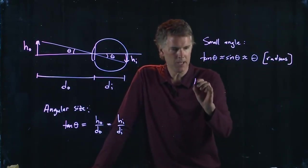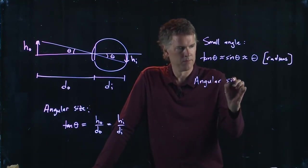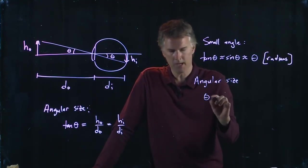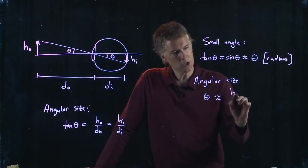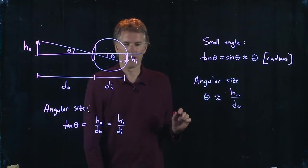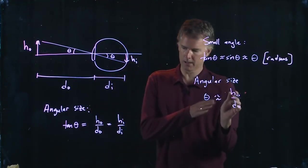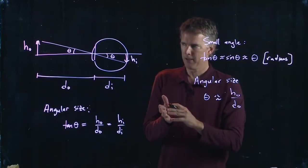And so we can write down the angular size theta is just going to be h_o over d_o. Okay, so this might have been where we went wrong before when we were calculating part B of that other problem, and